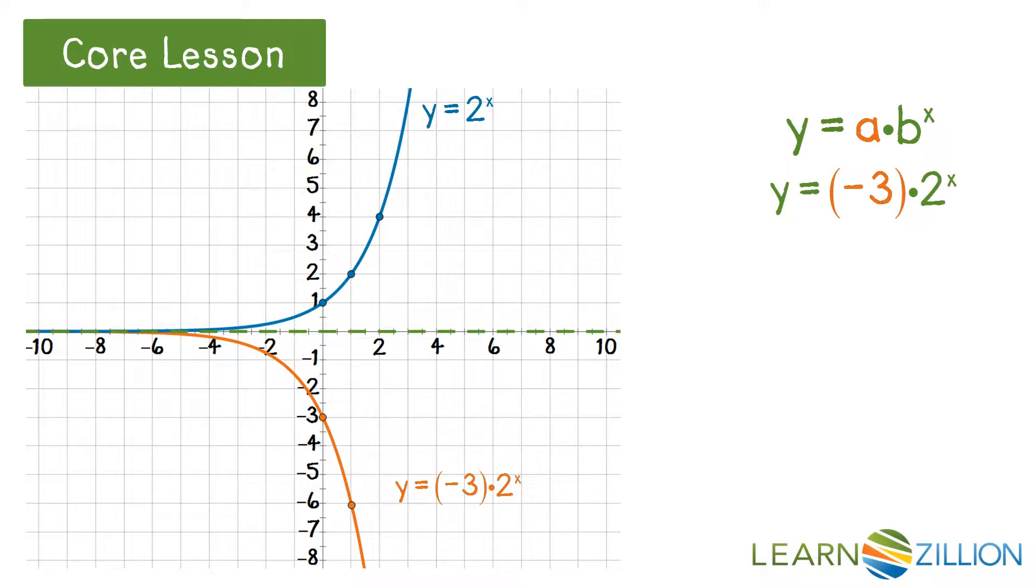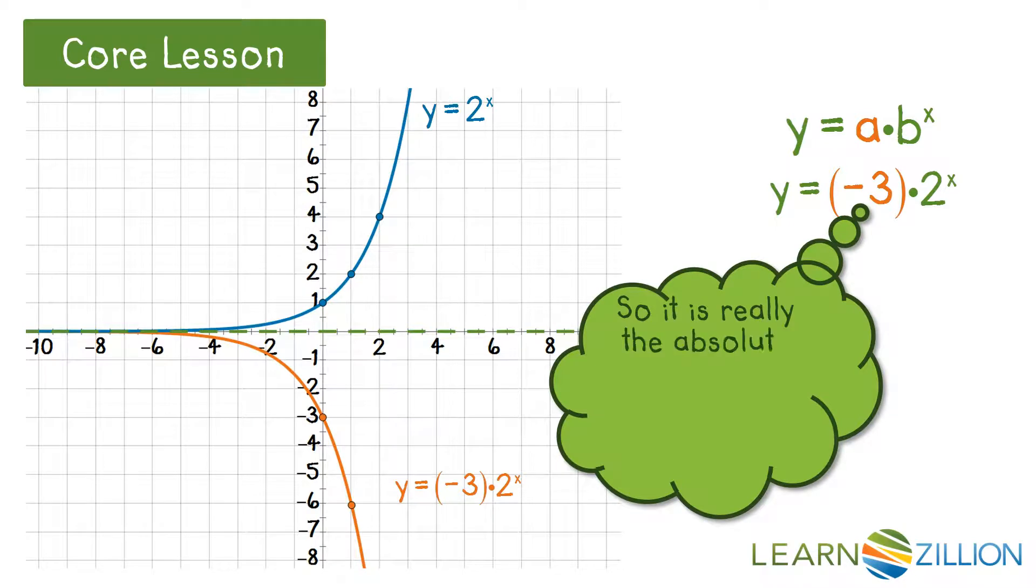With any negative a, it has been reflected over the x-axis, but the 3 stretches it vertically. So it's really the absolute value of a which gives the vertical stretch factor.